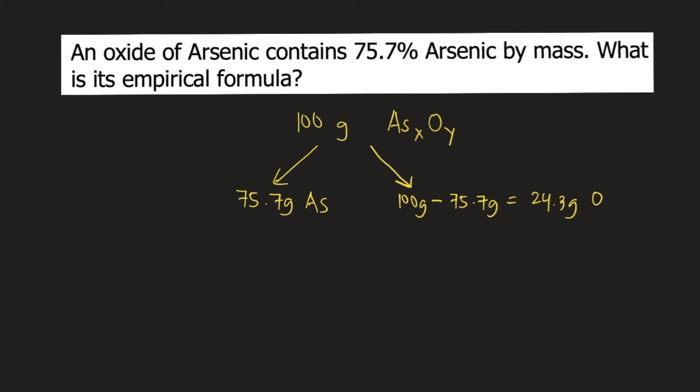The next step would be to convert grams of arsenic and grams of oxygen into moles. So we start with 75.7 grams of arsenic. The molar mass of arsenic is 74.92 grams per mole. So 1 mole of arsenic weighs 74.92 grams.